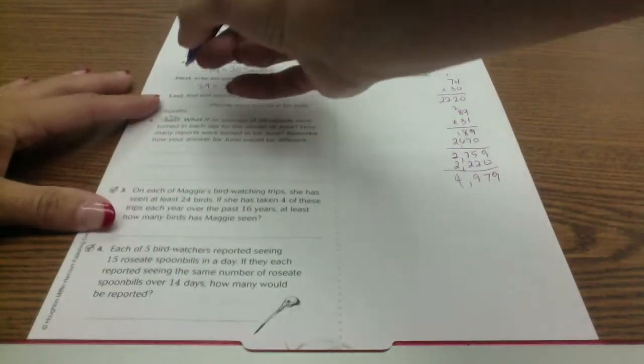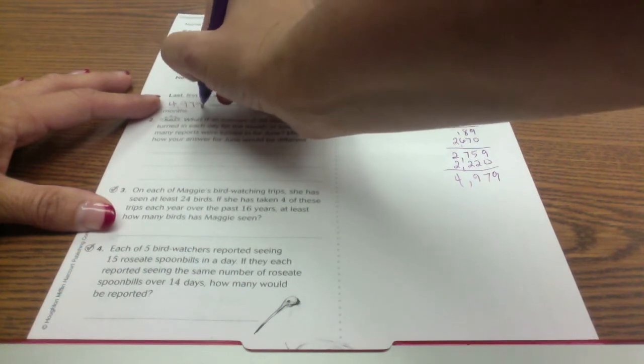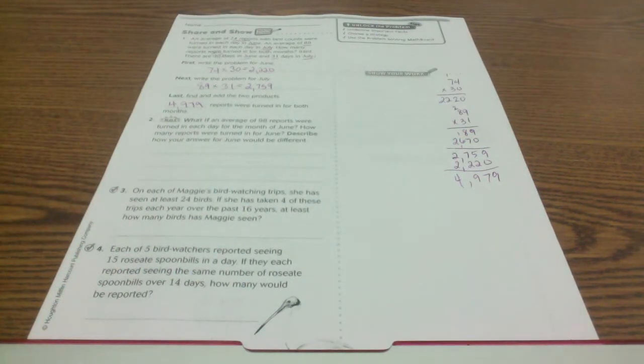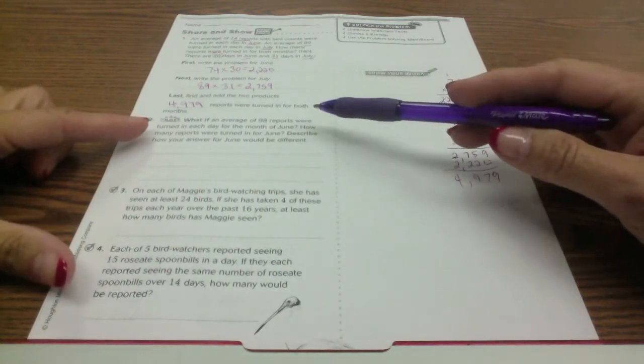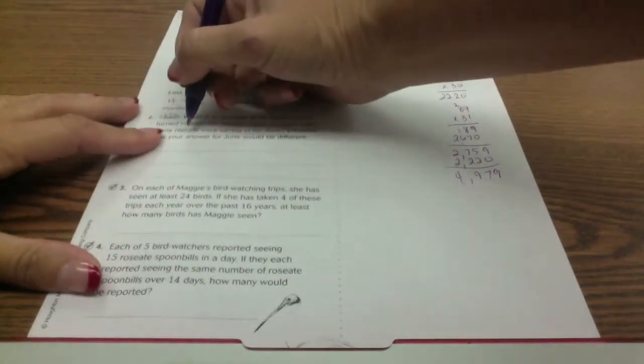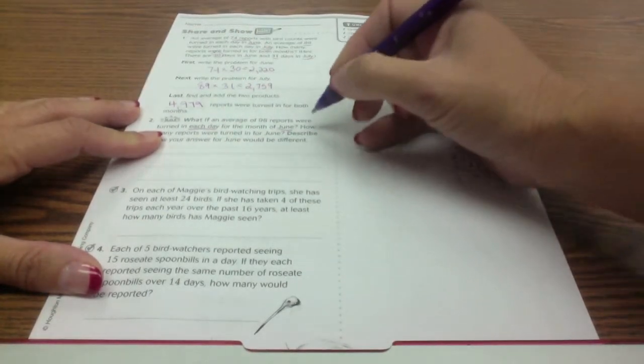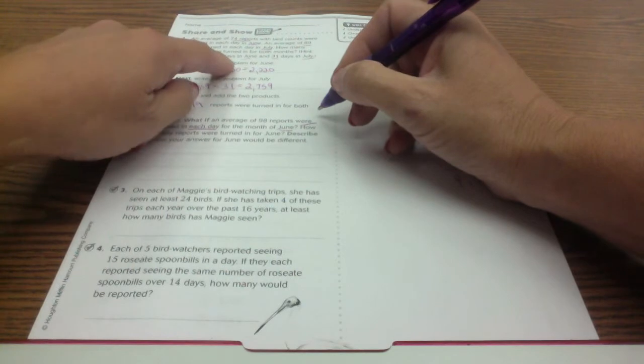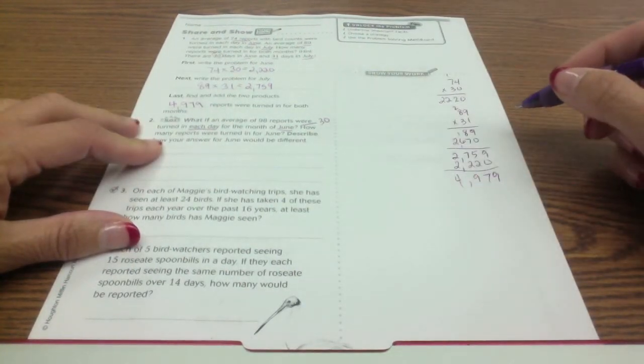And I have 4979. That's number one. Number two, what if an average of 98 reports were turned in each day? A lot of you were missing this. For the month of June, how many days were in June? It says right up here there was 30. How many reports were turned in for June? Describe how your answer for June would be different.